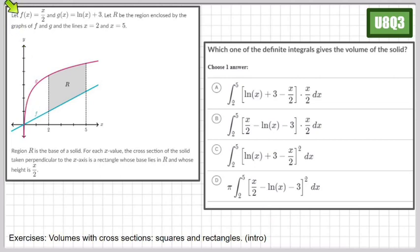So here it is. Let F be this and G be this. There's your G, there's your F. Let R be the region enclosed by the graphs of F and G and lines 2 and 5. So 2 and 5 are our boundaries.